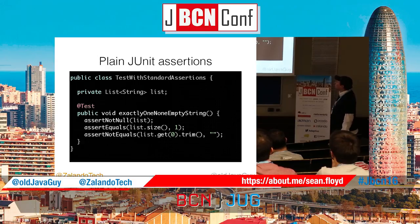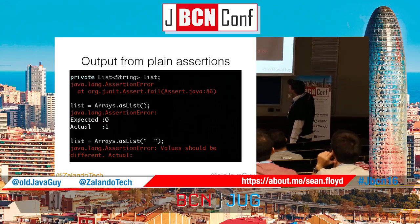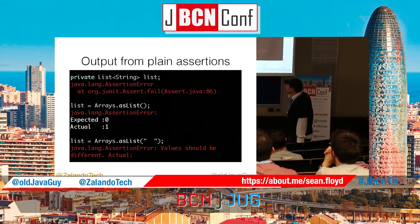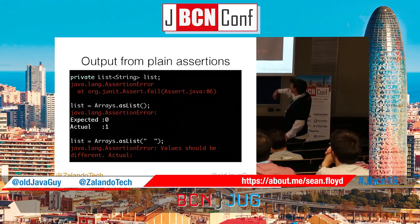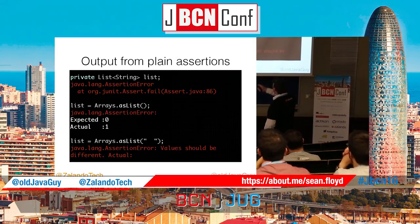In this case I'm doing three different assertions on a list. Depending on what's going on, I'll get an AssertionError for the assertNotNull with no message whatsoever. If I initialize it to an empty list, I'll get "expected zero, actual one" — which tells me nothing. And the third part tells me "values should be different." I basically wanted to check for one non-empty string, and none of this output tells me anything about that.